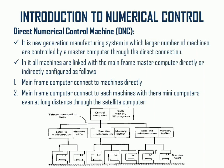The two configurations are: a mainframe computer connected to each machine directly, or a mainframe computer connected to each machine with mini computers, even at a longer distance through satellite. A typical DNC machine diagram shows the controller unit with bulk computer memory connected to different mini computers of different machine tools.